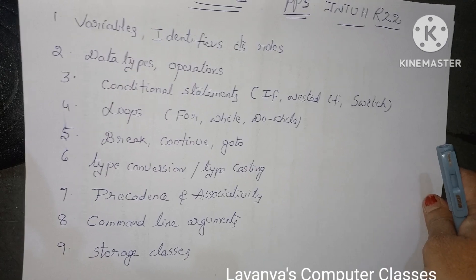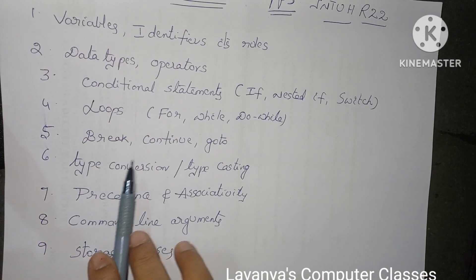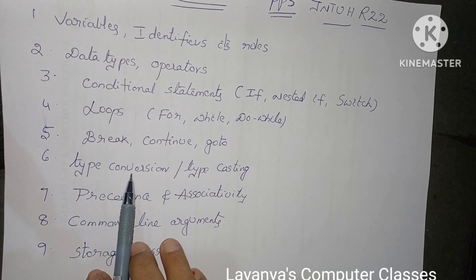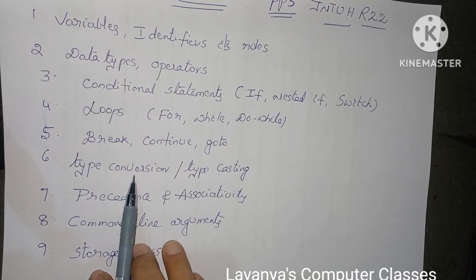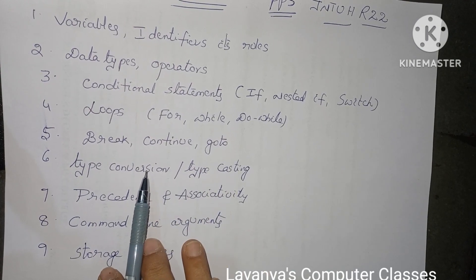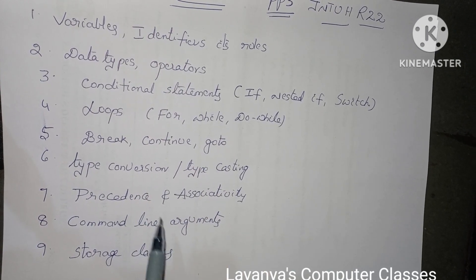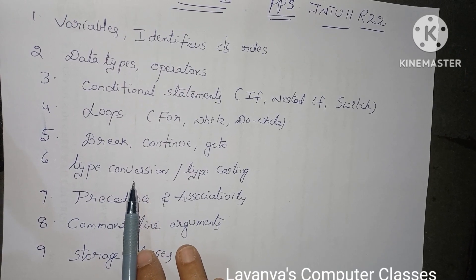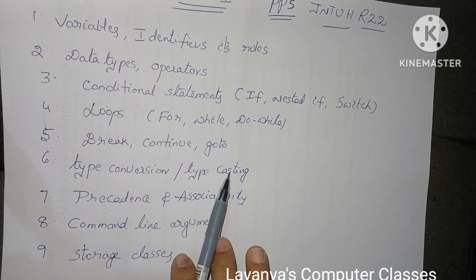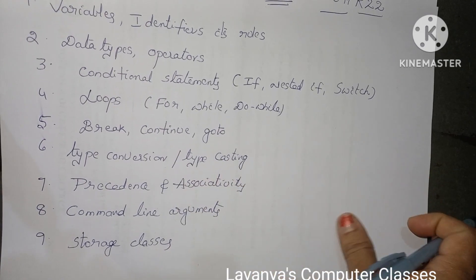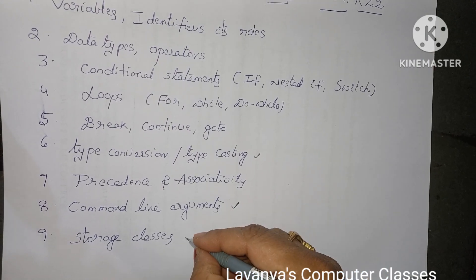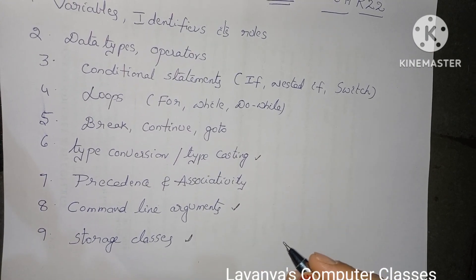Next: explain the difference between break, continue, and goto statements with example programs. A very important question is what is type conversion or typecasting — there is a separate video on my channel for that. In PPS, five different important topics are: typecasting, command line arguments, storage classes, and preprocessor directives.